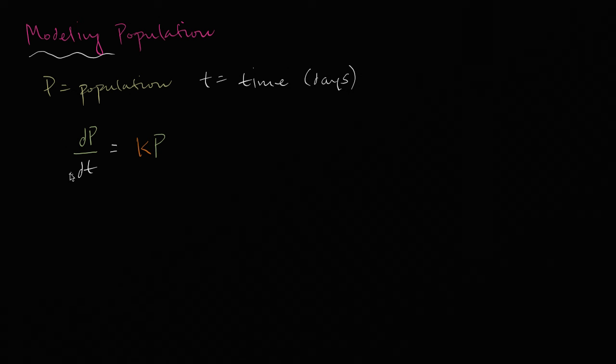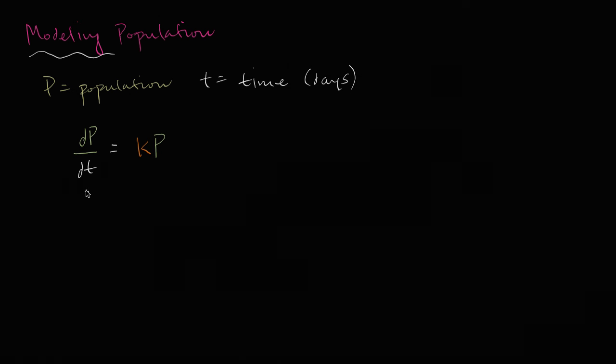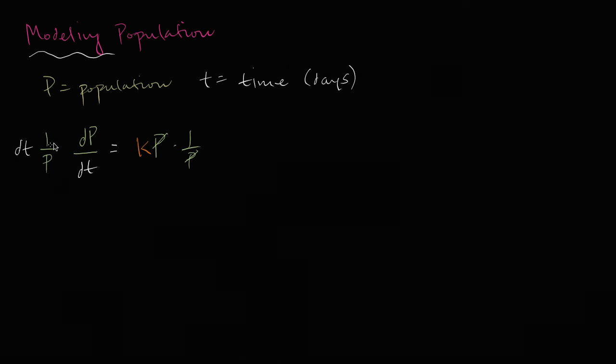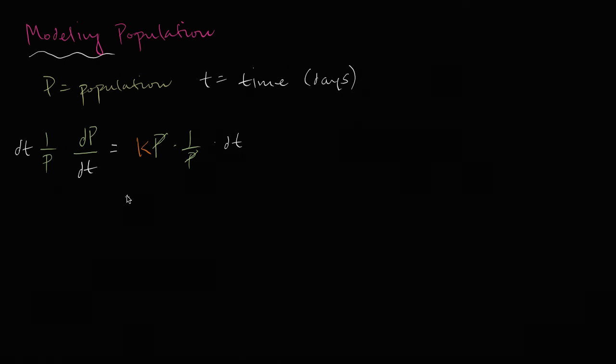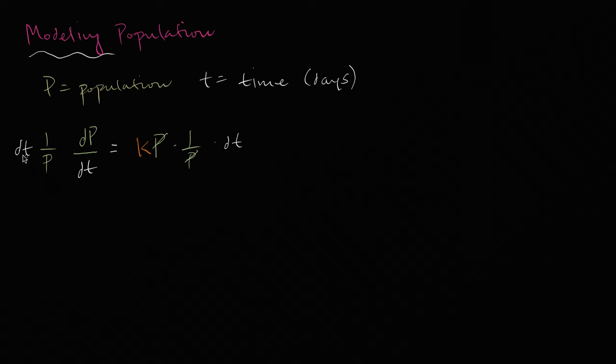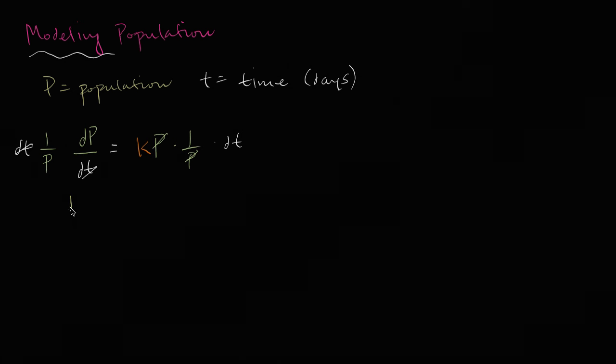So we want to put all the P's and dP's on one side and all the things that involve t, or that don't involve P, on the other side. So we could divide both sides by P, and so we'll have 1/P here, and then those will cancel. And then you can multiply both sides times dt. Once again, treating the differential like a quantity, which really isn't a quantity. You really have to view this as a limit of, as the change in P over change in time, the limit as we get smaller and smaller changes in time. But once again, for the sake of this, we can do this. And when we do that, we would be left with 1/P dP equals k dt.